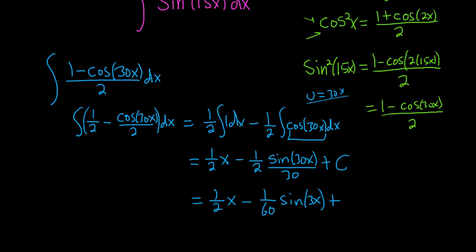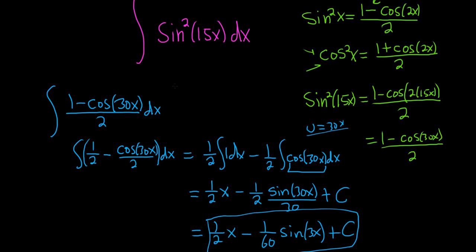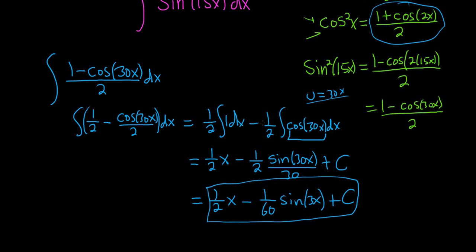And then at the very end, we have our constant of integration, capital C. So that would be the final answer. Not really a super tough problem. I think it's a good question. It's simple. Cosine squared is exactly the same, except you would use this identity instead. So I hope this video has been helpful. Take care.